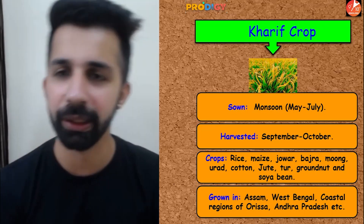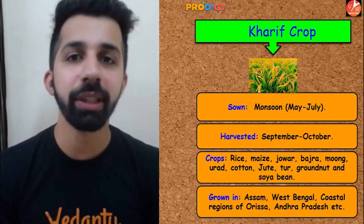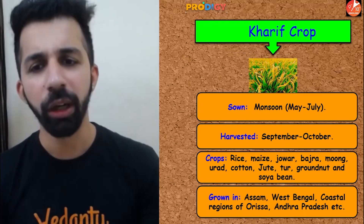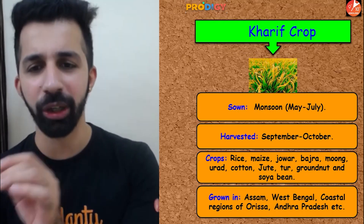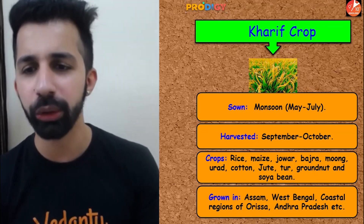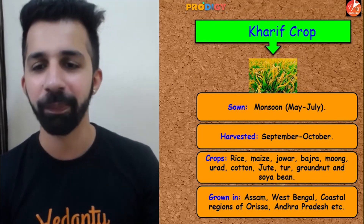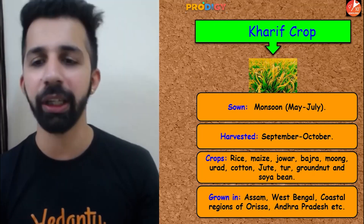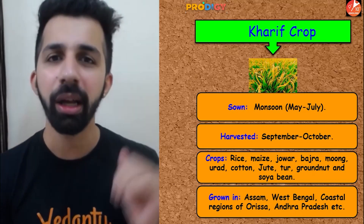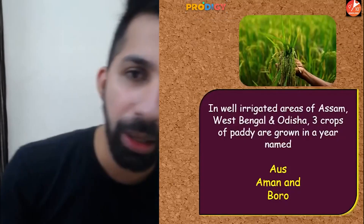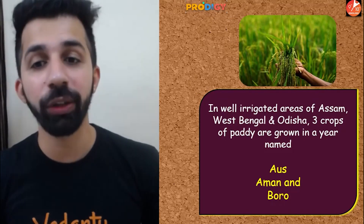Next we have Kharif crops. They are sown in the monsoon, between May and July, and harvested between September and October. Crops such as rice, maize, jowar, bajra, urad, cotton, jute, tur, groundnut, and soybean are the major Kharif crops. They are mostly grown in Assam, northeast India, West Bengal, and the coastal regions of Odisha and Andhra Pradesh. In well-irrigated areas of Assam, West Bengal, and Odisha, three crops of paddy (rice) are grown in a year.